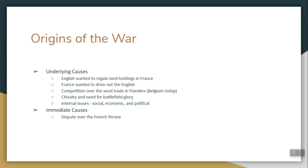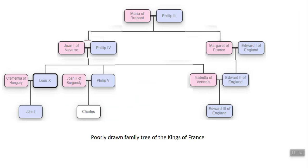Now the immediate cause — the spark that sets off the gunpowder, if you will — is the dispute over the French throne. Now here you have a very poorly drawn family tree of the kings of France. And I'm going to blame this on my two-year-old. He did this, not me. Definitely not me.